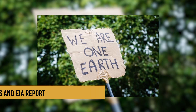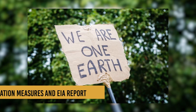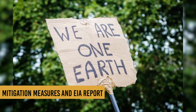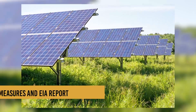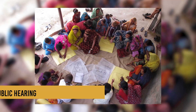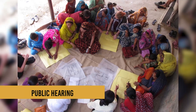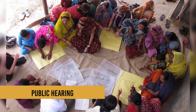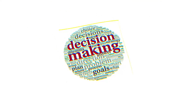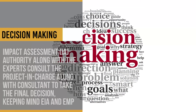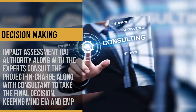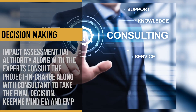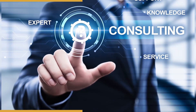Mitigation measures and EIA report: the EIA report should include actions and steps for preventing, minimizing, or bypassing the impacts, or else the level of compensation for probable environmental damage or loss. Public hearing: on completion of the EIA report, public and environmental groups living close to the project site may be informed and consulted. Decision making: the impact assessment authority along with experts consult the project-in-charge and consultant to take the final decision, keeping in mind the EIA and the Environmental Management Plan (EMP).